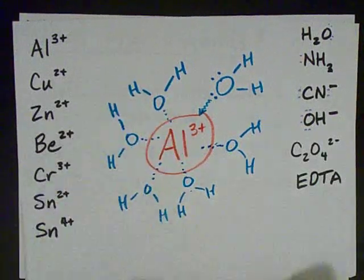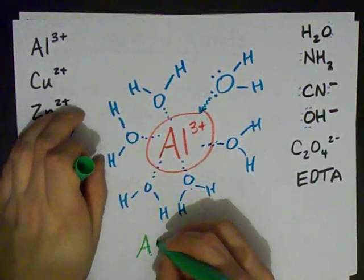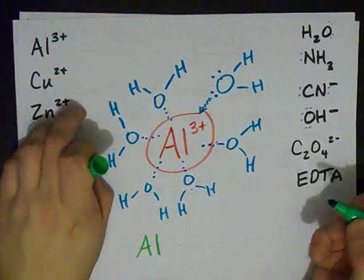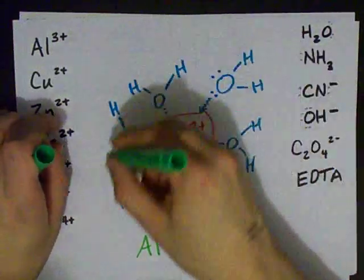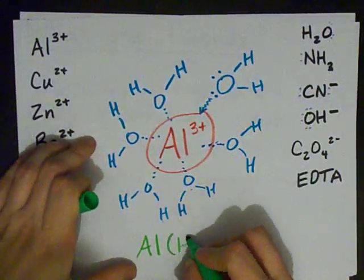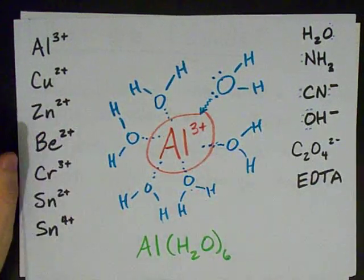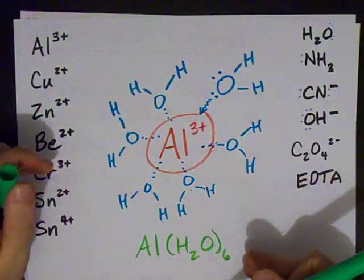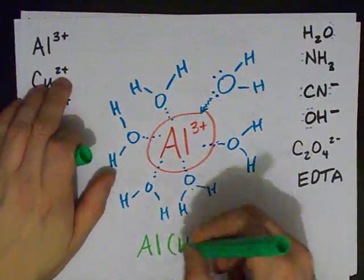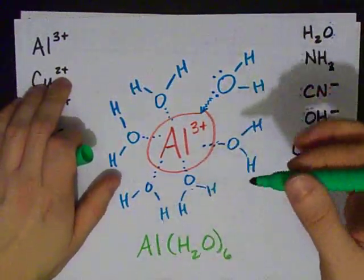The last thing, or the things I want to point out here, are that usually we write this as Al 3 plus. But when it's surrounded by waters like this, we show that it's surrounded by six waters by writing H2O6. The same way you would write aluminum nitrate or aluminum iodate or something.